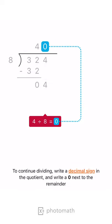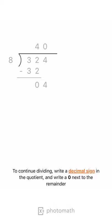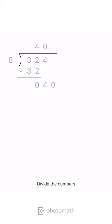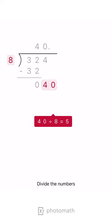To continue dividing, write a decimal sign in the quotient, and write a 0 next to the remainder. Divide the numbers. Write the result, 5, in the answer line.